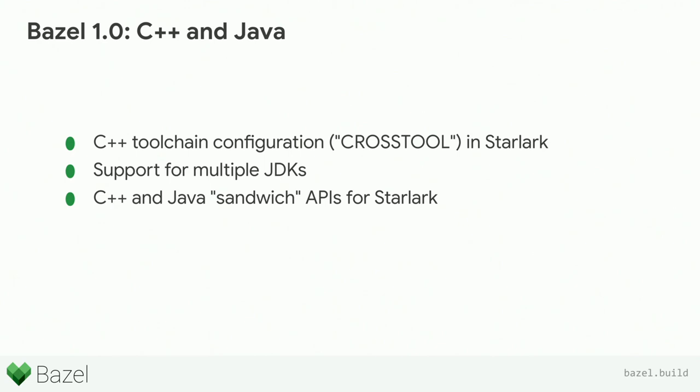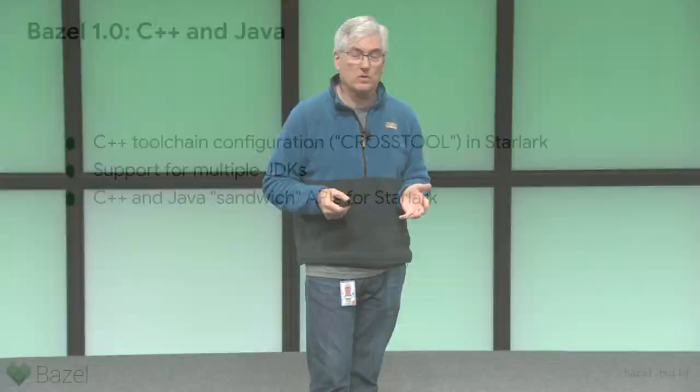We now support multiple JDKs for Java, which is obviously useful for folks who worry about JDK differences. We've done a ton of work to refactor our code to what we call internally the sandwich APIs. While we still have some rule code and native code in Java, we expose that native functionality in a controlled way to enable other rules — say, Scala rules that need to access Java or other JVM-compliant languages. A lot of our internal APIs have been cleaned up to make the system easier to extend.